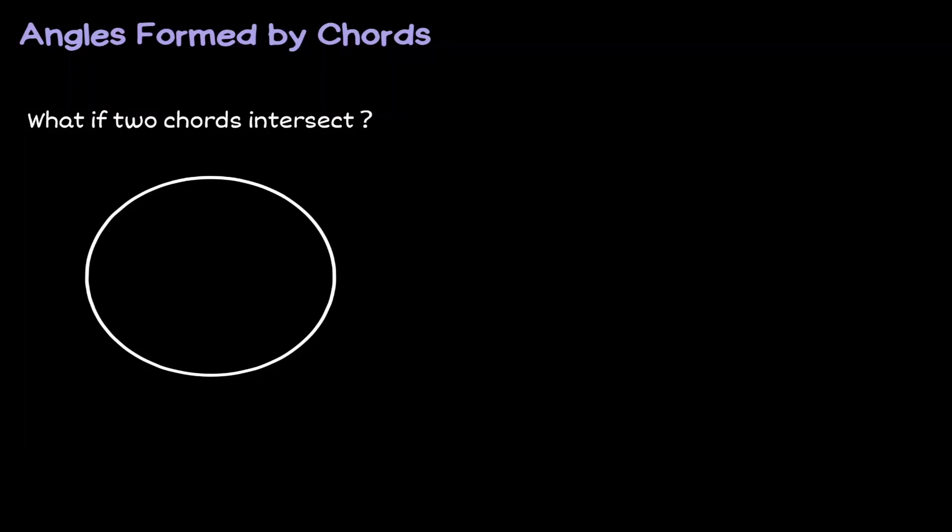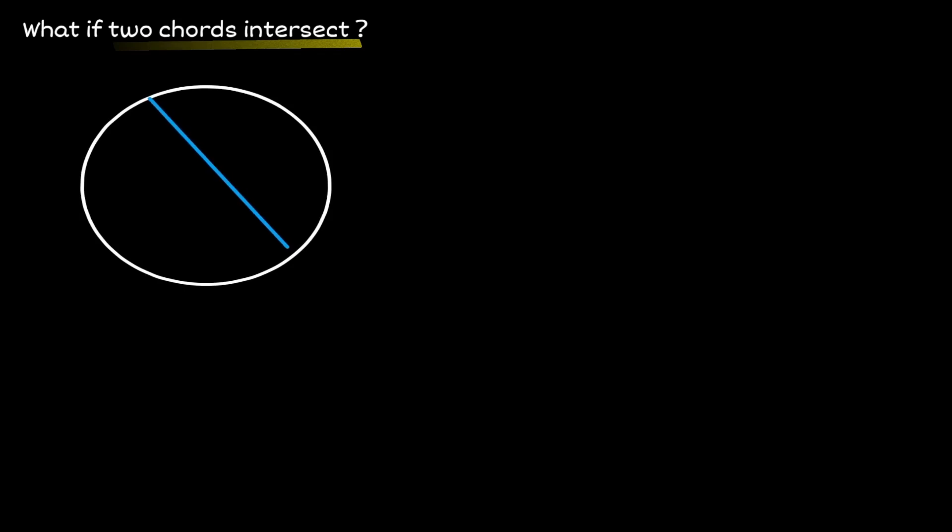Welcome. Let's discuss the idea of angles formed by intersecting chords. What would happen if two chords intersect with each other? Let's consider chord AB and chord CD.